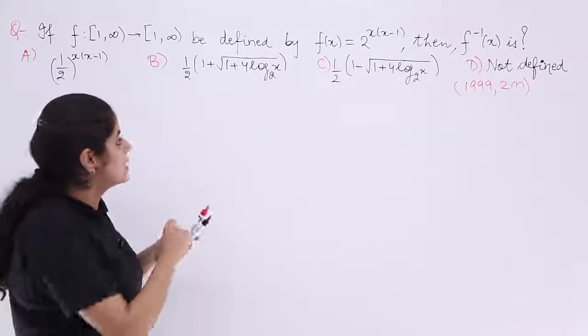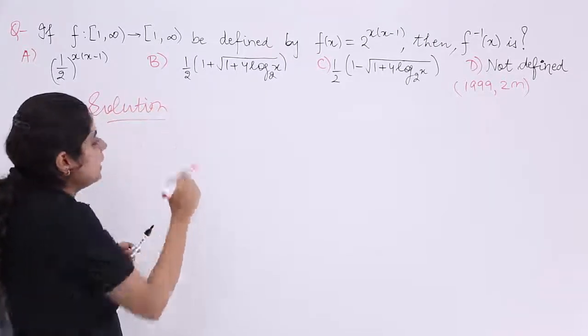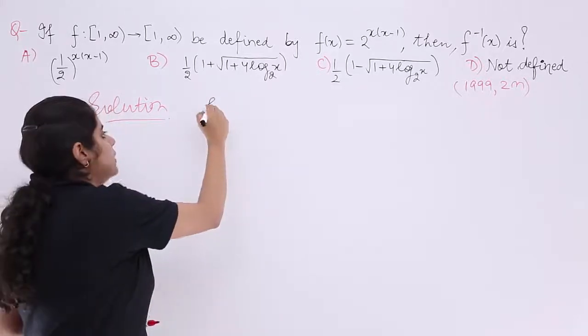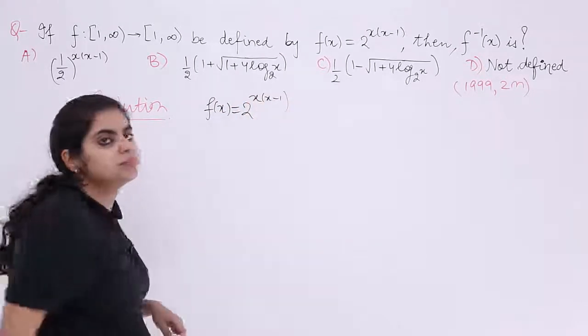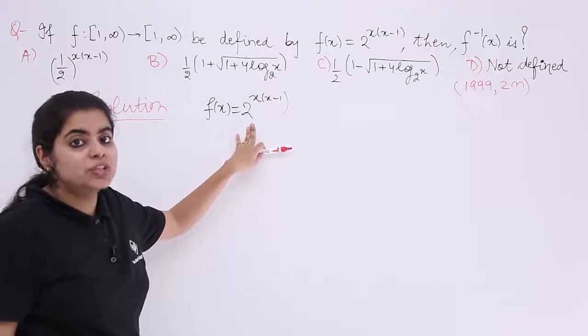First put the heading as solution. And then let's get started with solving it. Now, the function is what? We will be writing it again. f(x) is equal to 2 raised to the power x times x minus 1. I have something in power. Exponential.